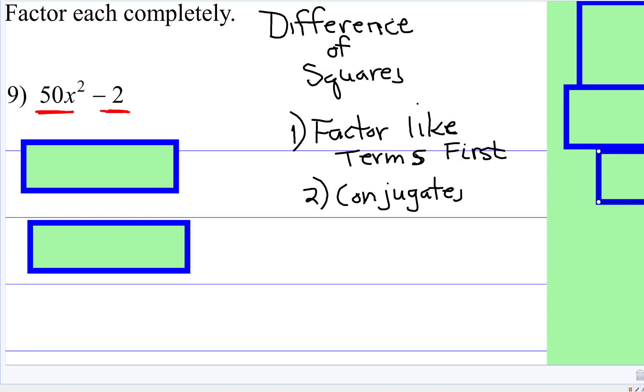So what these two have in common, they are both even numbers, they both have a two in common, and then 50 divided by two is 25 times x squared, so 50x² divided by two is 25x².